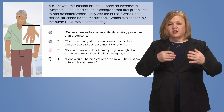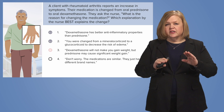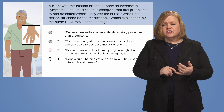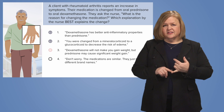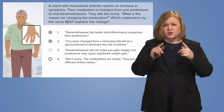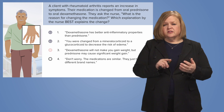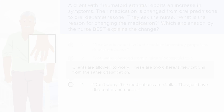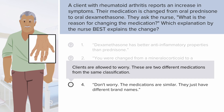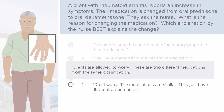We can get rid of answer four right away. Generic names are what you'll see predominantly on the NCLEX, and prednisone and dexamethasone are generic names — not brand names. They are two different medications entirely, so answer four is eliminated.